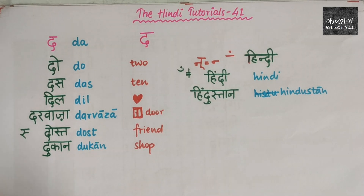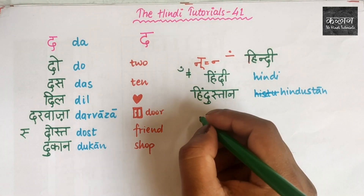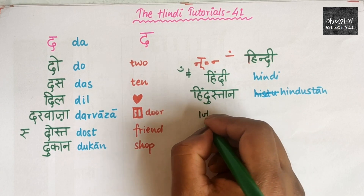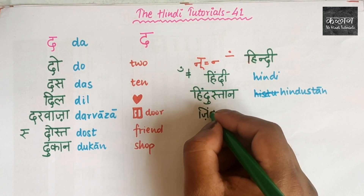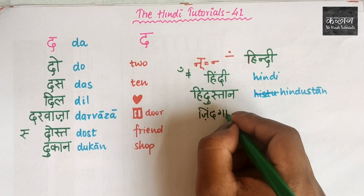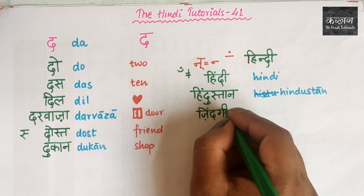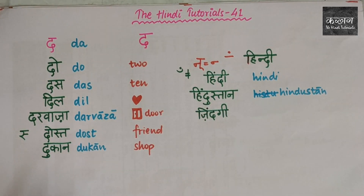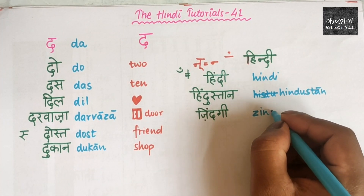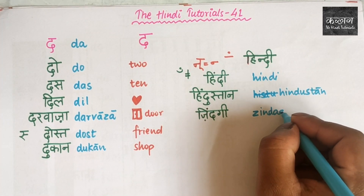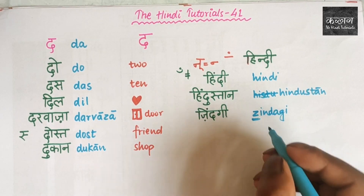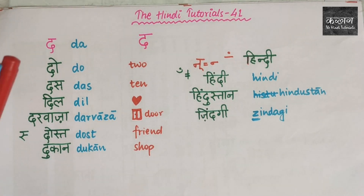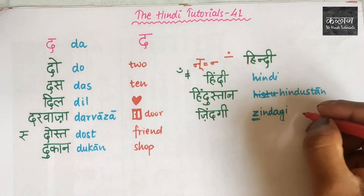The next word is 'Zindagi'. Zindagi is a word that is repeated a lot in Hindi songs. Zindagi means life. The word has the sound Z, which indicates it has Persian origin. So, Zindagi means life.